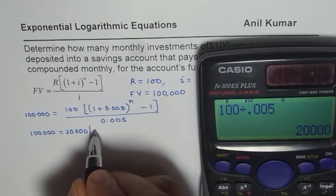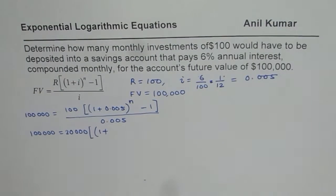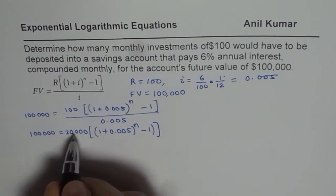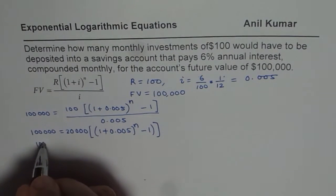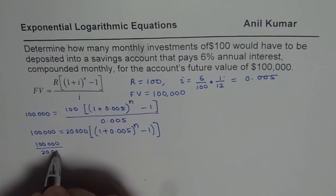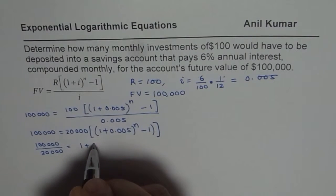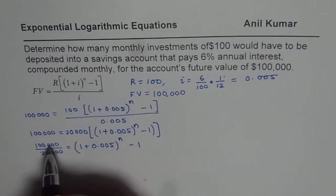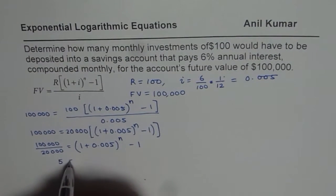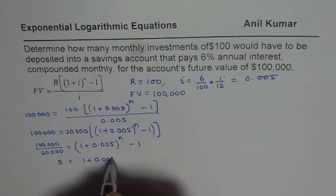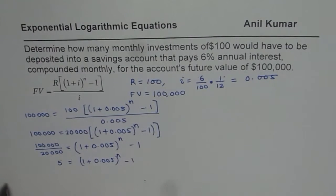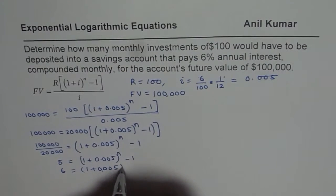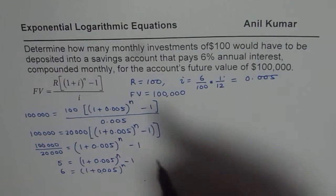So we have 20,000 times (1 plus 0.005 to the power of N minus 1). Now dividing both sides: 100,000 divided by 20,000 equals (1 plus 0.005) to the power of N minus 1. That simplifies to 5 equals (1.005) to the power of N minus 1. Bringing the 1 to the left side, we get 6 equals (1.005) to the power of N.